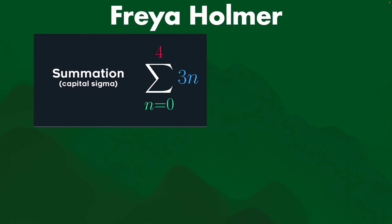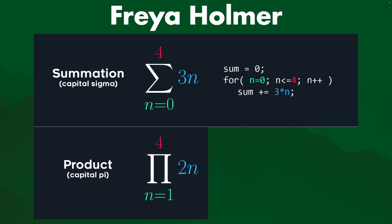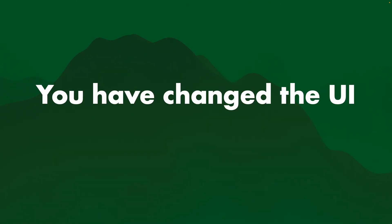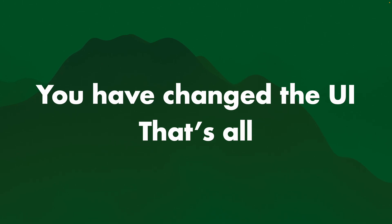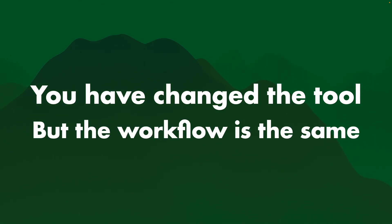Freya Holmer made an image about this that's really cool: in math, you have symbols that do special things — like summation, which is really just a loop in code, and product, which is also just code. The visualization is just that code. You've changed the UI, that's all. You've changed what the tool looks like, but the workflow is the same.